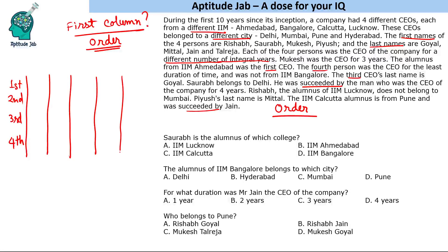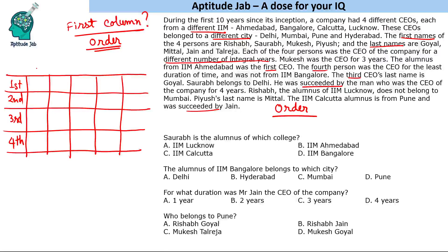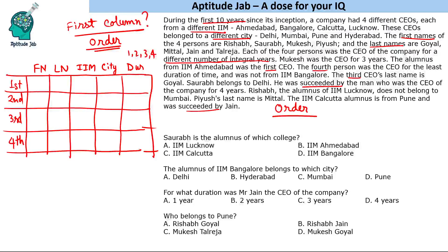That is the biggest challenge in these questions. If you know what should be the first column, it makes your life easy. Other columns — first name, last name, IIM, city, and duration — do not matter in terms of order. IIMs are A, B, C, L; cities are given; and for duration, since it covers 10 years with different integral years, durations will be 1, 2, 3, or 4 years.